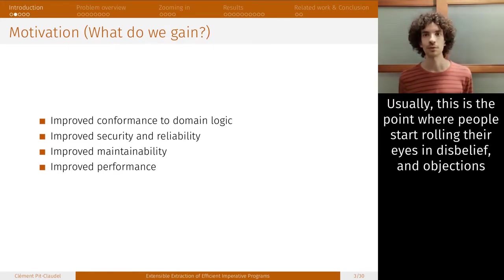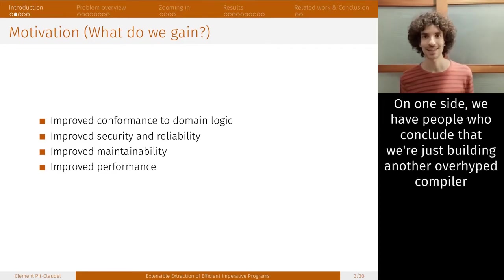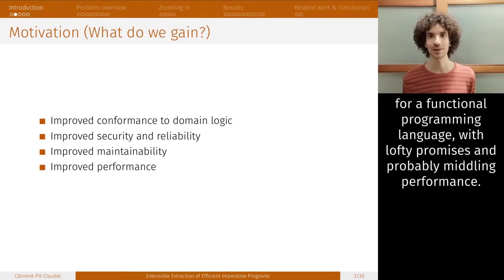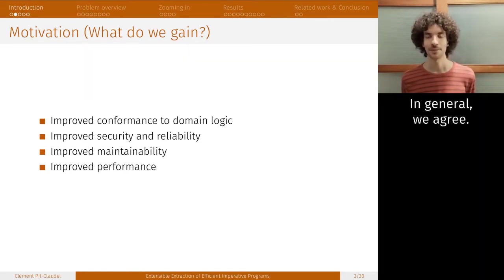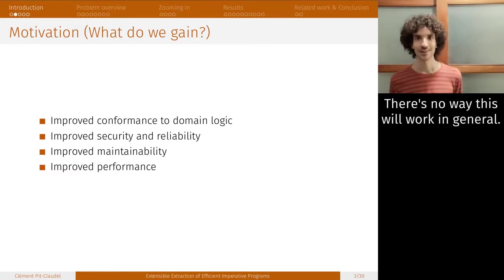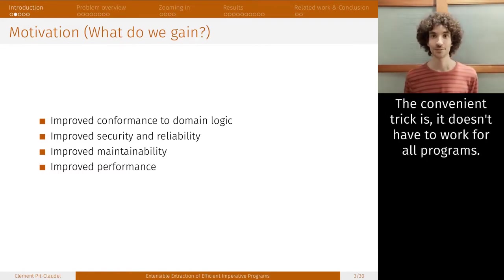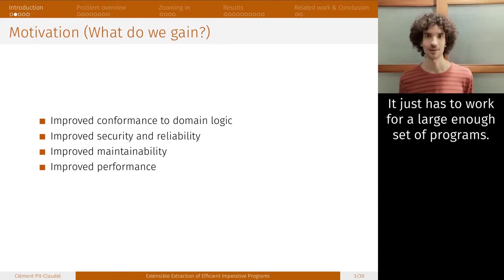Usually, this is the point where people start rolling their eyes in disbelief, and objections tend to fall into two camps. On the one side, we have people who conclude that we're just building another over-hyped compiler for a functional programming language with lofty promises and probably mid-link performance. On the other hand, we have people who think that there's just no way this can be made to work. In general, we actually agree, there's no way this will work in general. The convenient trick is, it doesn't have to work for all programs, it just has to work for a large enough set of programs.